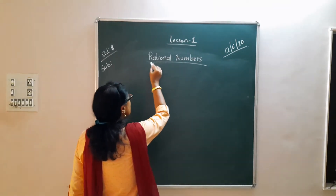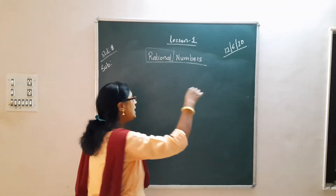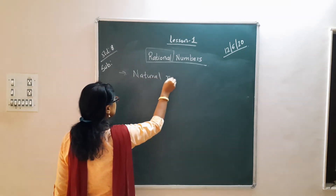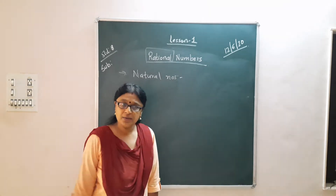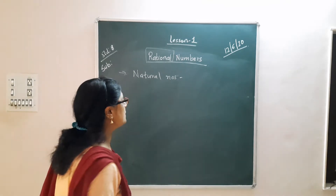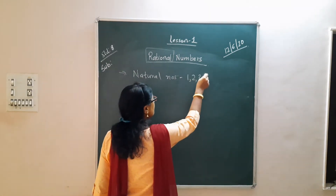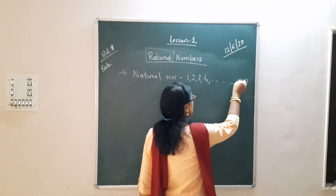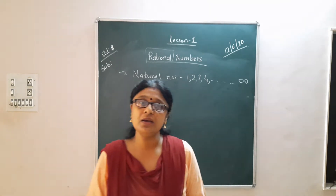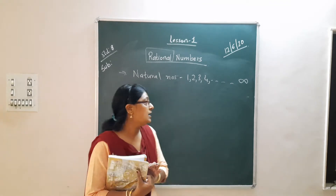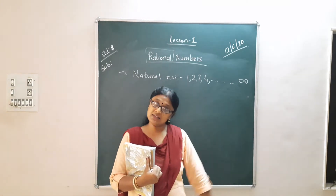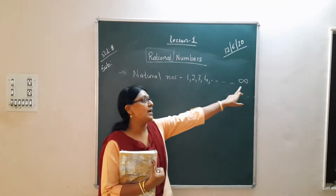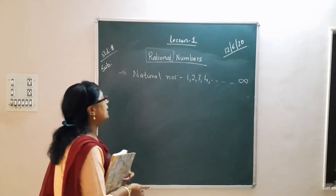Now before we move on to Rational Numbers, let me just revise what are Natural Numbers. Natural Numbers means all the positive numbers starting from 1 — 1, 2, 3, 4, dot dot dot, to infinity. So which is the smallest natural number? It is 1. Is there a largest number? Can you find the end of any natural number? No, they are endless. So we write it as infinity. So these are natural numbers.